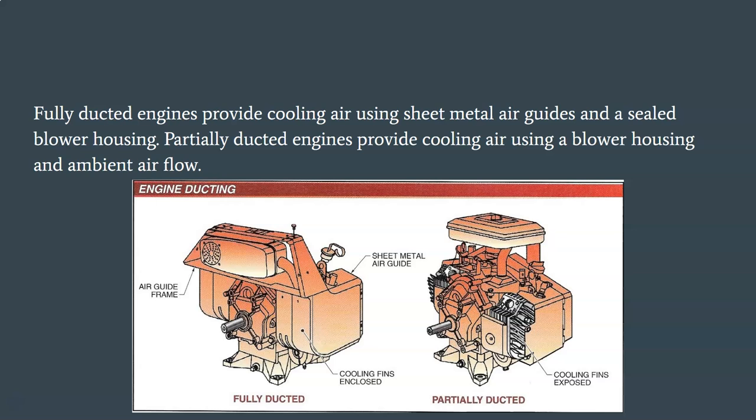Fully ducted engines provide cooling air using sheet metal air guides and a sealed blower housing, while partially ducted engines provide cooling air using a blower housing and ambient airflow. Engine ducting is required when the application requires more control of cooling air. A fully ducted engine is one in which cooling airflow, routing, and rate are controlled by air guides and a sealed blower housing. A partially ducted engine is one in which cooling air is provided by the blower housing and ambient airflow.